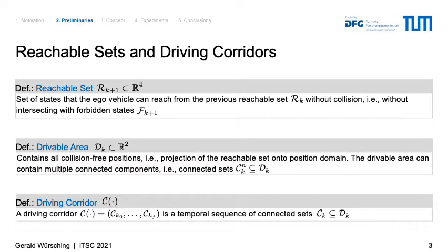Before presenting our concept, I would like to briefly introduce some preliminaries. We define the reachable set as the set of states that the ego vehicle can reach from the previous reachable set without collision, meaning without intersecting with a set of forbidden states. This set of forbidden states is given by the location of static obstacles and by the prediction of dynamic obstacles. By projecting the reachable sets onto the position domain, we obtain the drivable area — all collision-free positions for the ego vehicle. The drivable area can be disconnected, for example if there are obstacles in the environment, and that is why we also define connected components, or connected sets, within the drivable area.